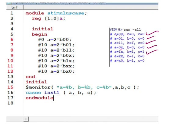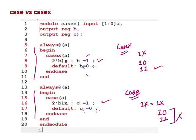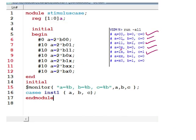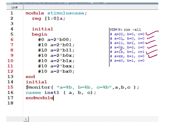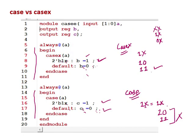Then a = xx. Inside casex, xx means it can be 1x also, it can be 0x also. So it will match the 1x entry, giving b=1. In casex there is no match for the second case, so c=0. Result: b=1 and c=0. Next, a = x0 — inside casex this x can be 0, it can be 1, so it will match, giving b=1 and c=0.